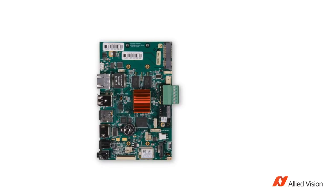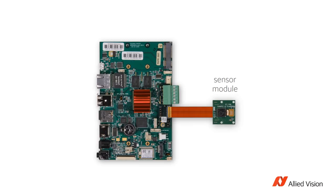Embedded systems typically rely on a low-cost sensor module connected to the processing board via a flex cable MIPI CSI-2 interface. As you can tell from the name, a sensor module consists of an image sensor on a carrier board and that's about it. The image data delivered by the sensor is more or less raw, as a sensor only has limited image processing capabilities, so most of the image correction has to take place on the host side.